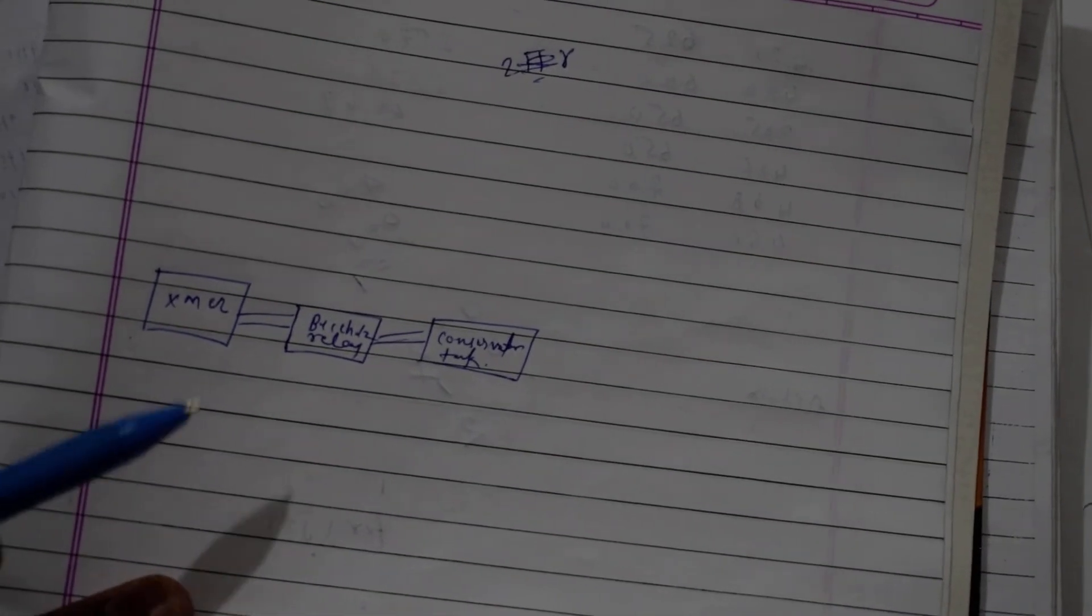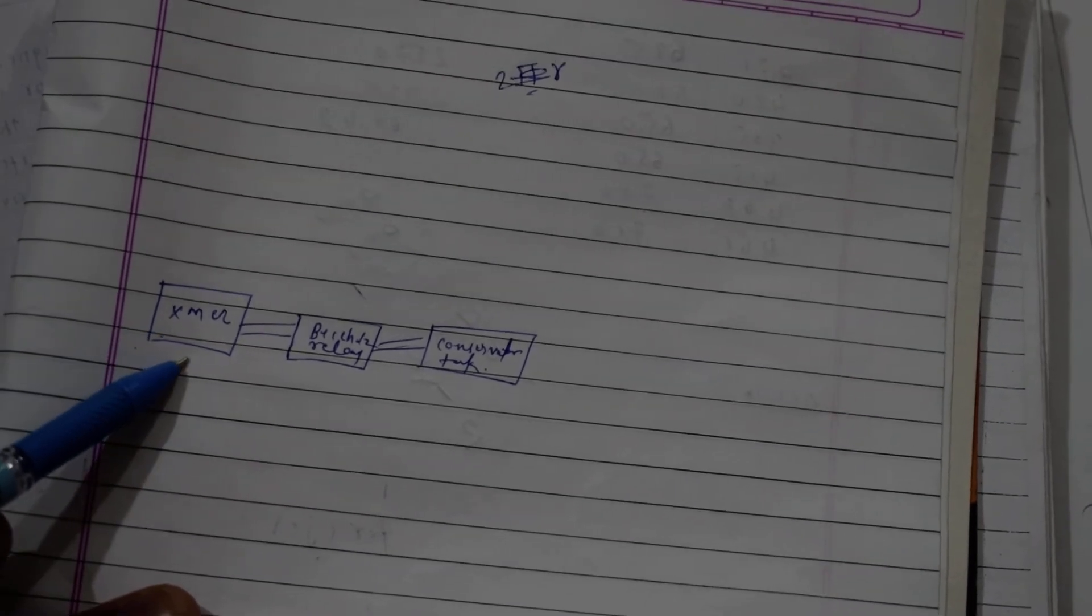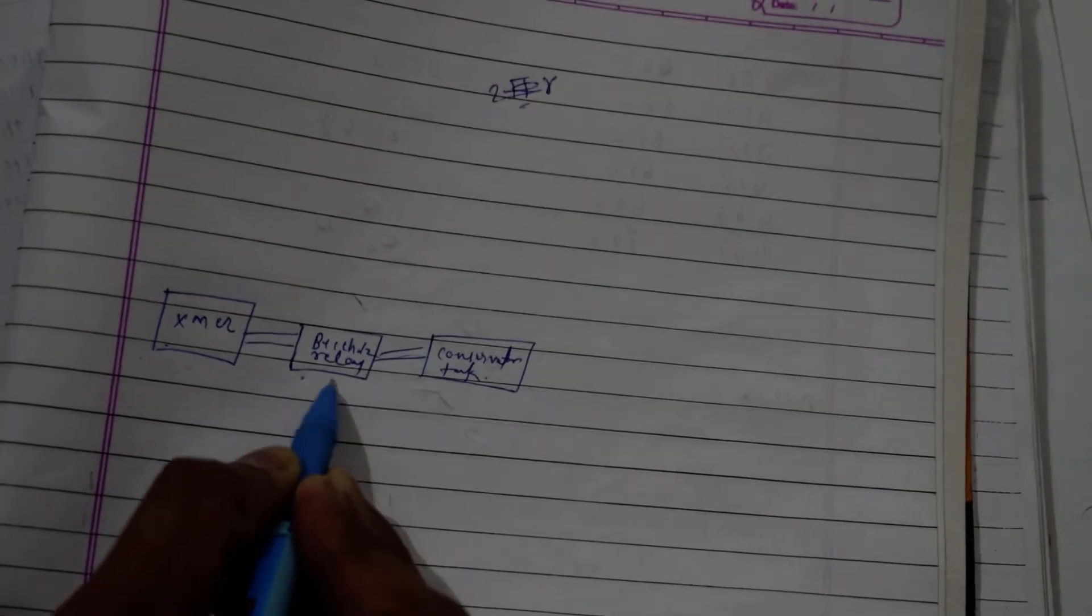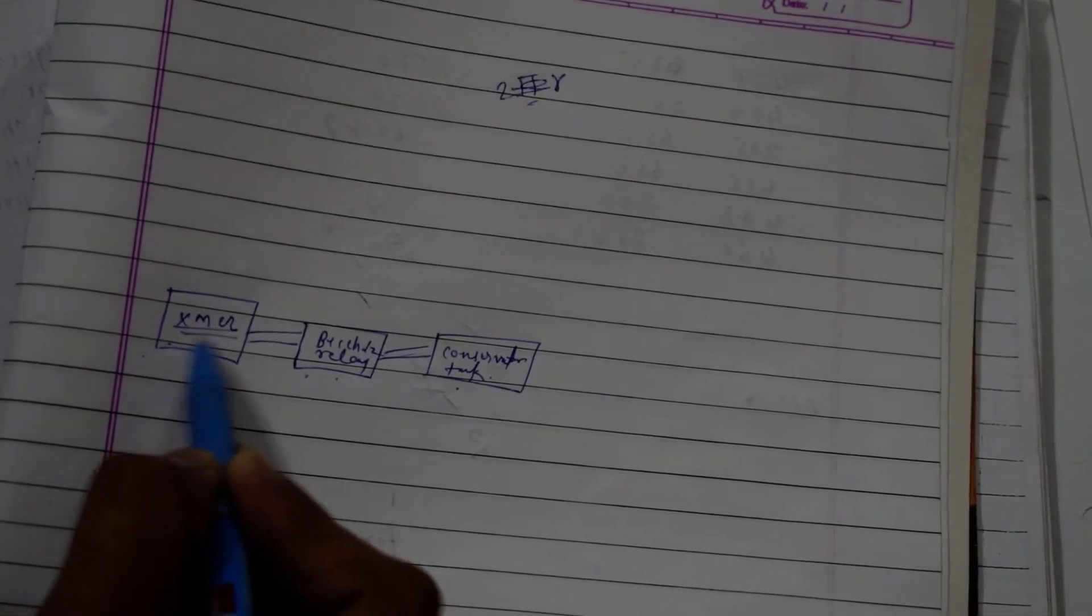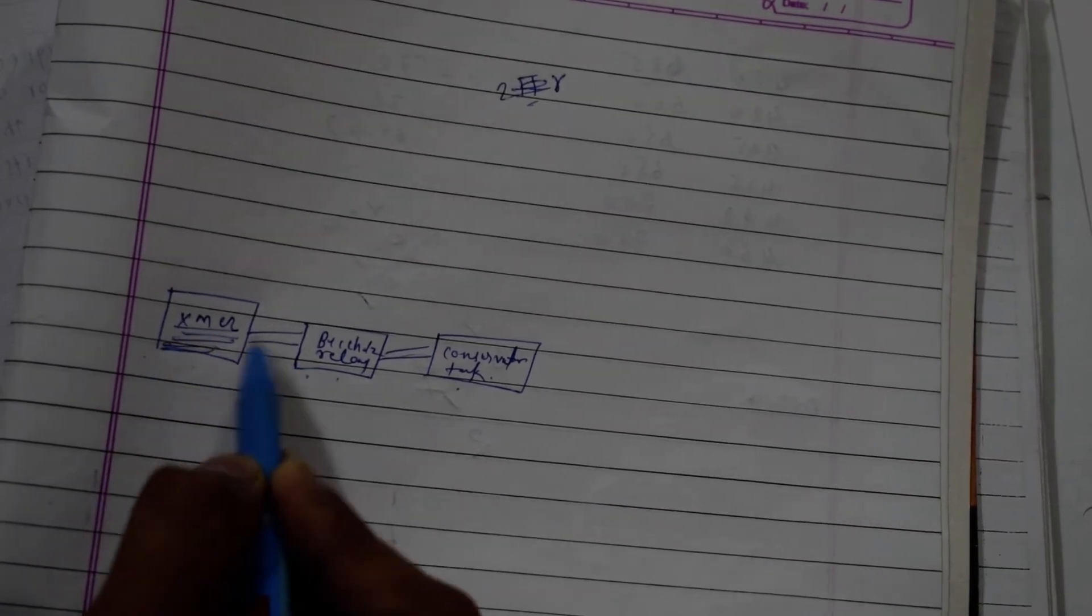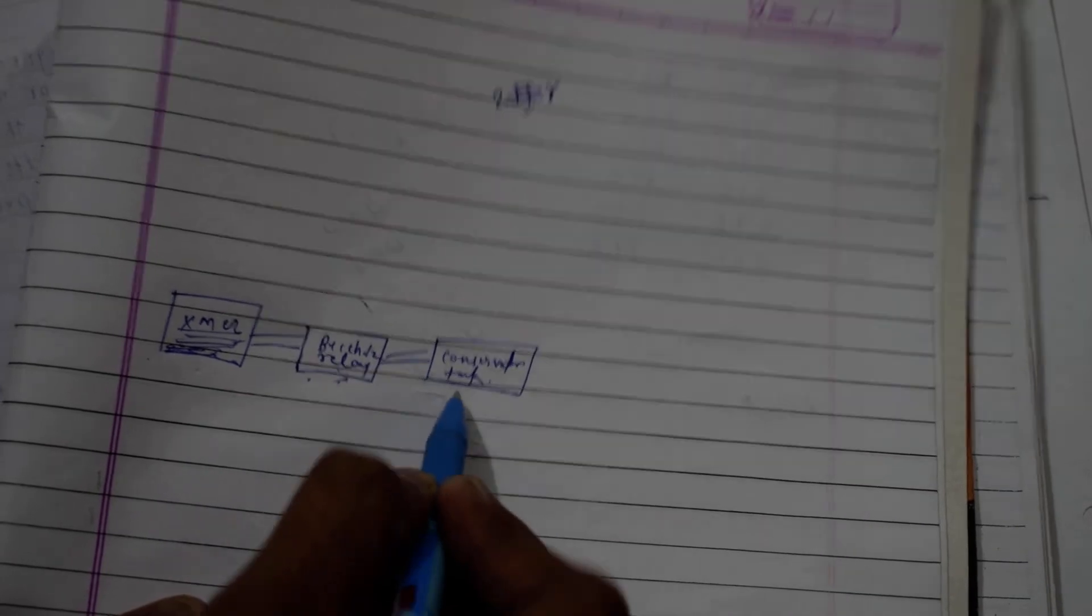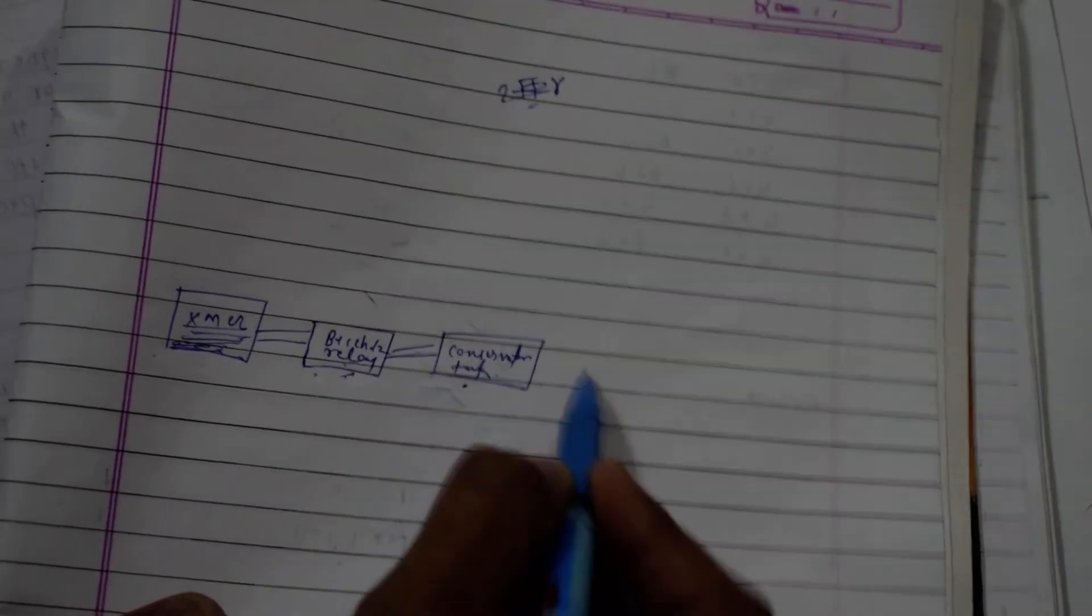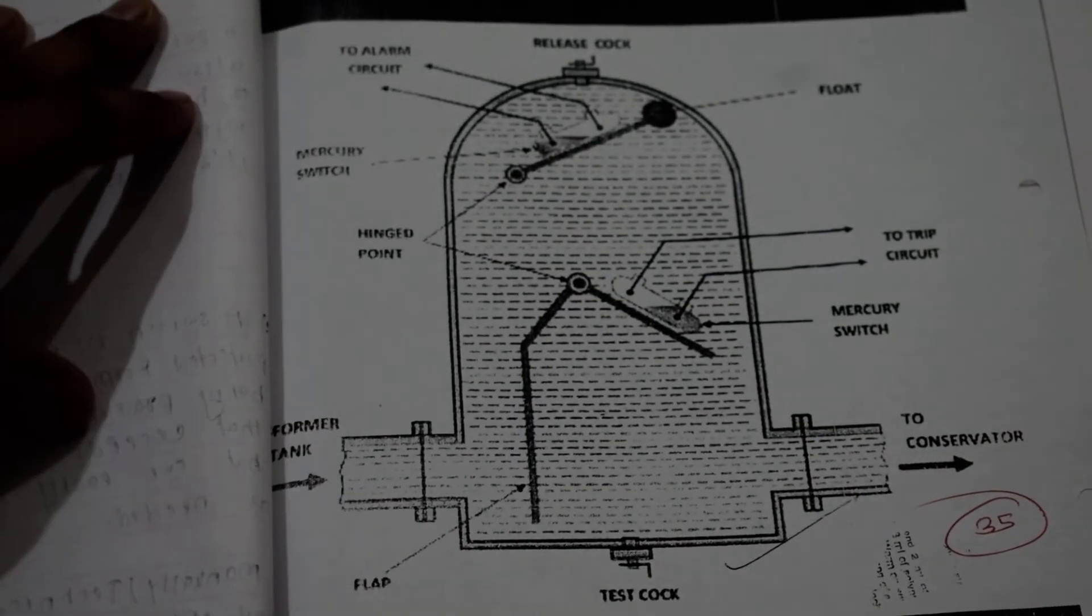The Buchholz Relay is used to protect the main transformer where there are coils and windings. After the Buchholz Relay, there is a conservator tank. So the transformer is oil-filled, then the Buchholz Relay, then the conservator tank, and there is a breather. The conservator and transformer are connected to the Buchholz Relay. How does the Buchholz Relay protect?